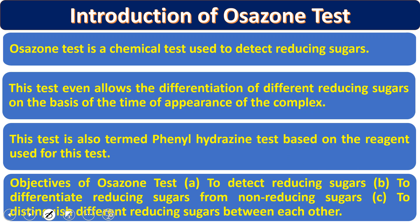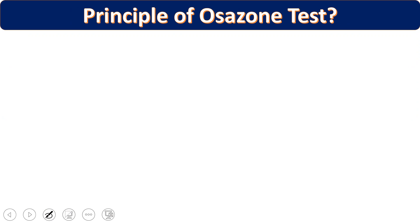The objective of this test is to help in the detection of reducing sugars — to detect whether a reducing sugar is present or absent, and to differentiate reducing sugars from non-reducing sugars. Because only reducing sugars give a positive test, you can also differentiate between two reducing sugars depending on the time of appearance and the crystal shape.